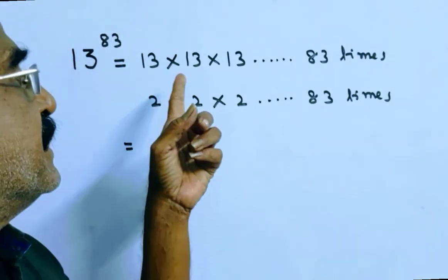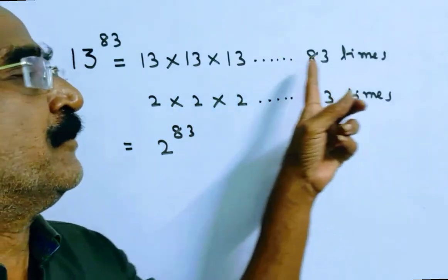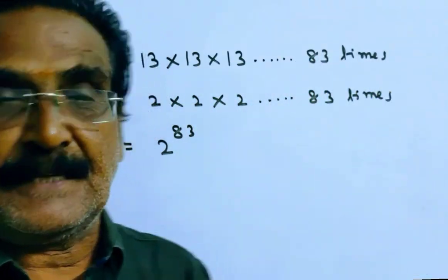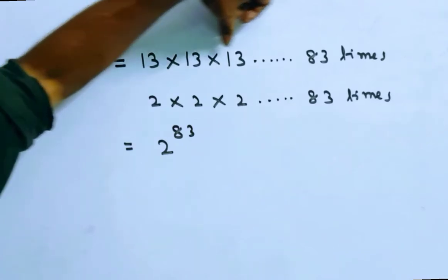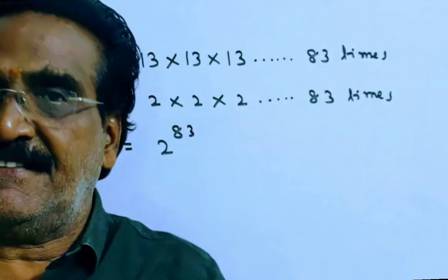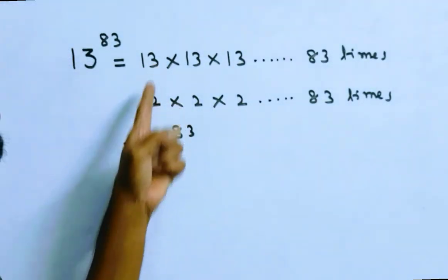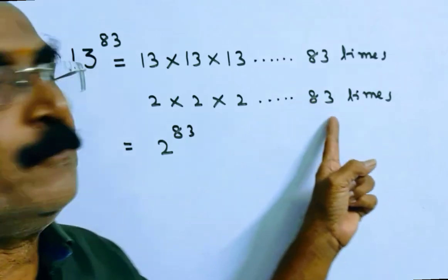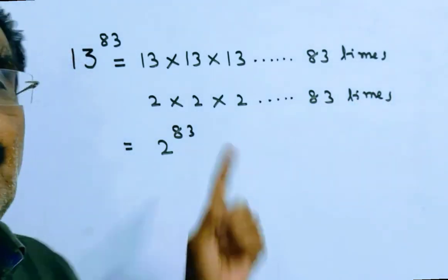Friends, 13 power 83 means 13 into 13 into 13 into, so on, up to 83 times. Friends, when this expression is divided by 11, the remainder is 2 into 2 into 2 into 83 times, that is equal to 2 power 83.